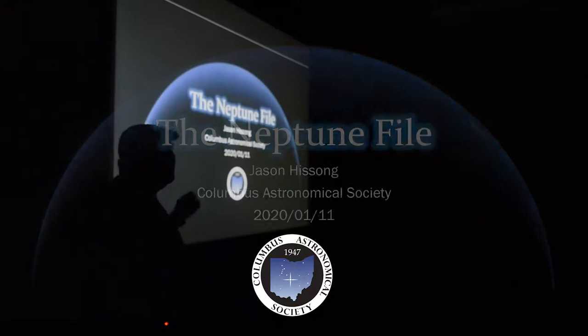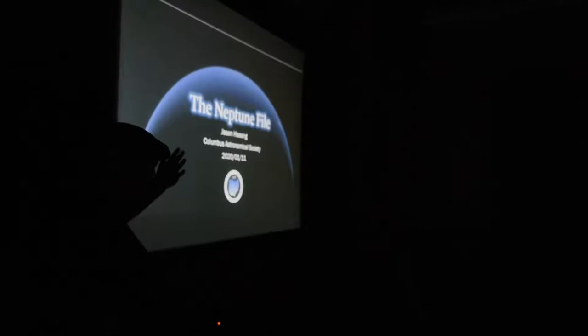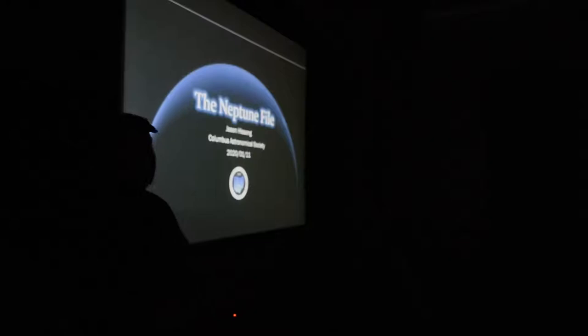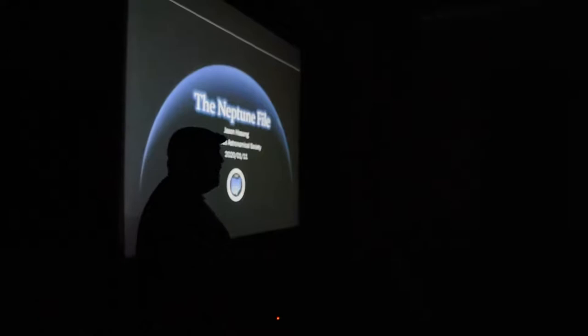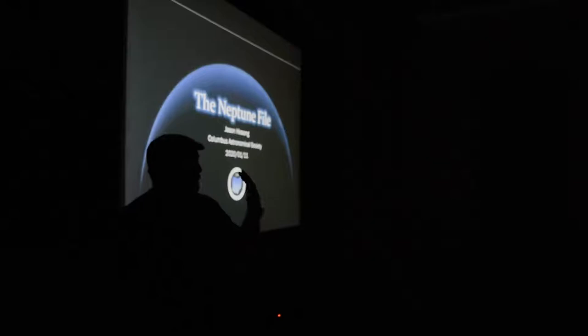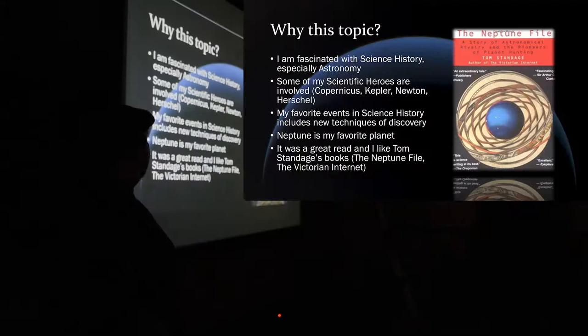Neptune was the first planetary or solar system body that was discovered not by empirical observations, like us looking at something in the sky and saying, hey, look, that's something new, like a comet or an asteroid or whatever. Neptune was discovered based on mathematical prediction. And I want to be talking about how that happened and kind of a build-up of how we got to the point where we can do this kind of thing.